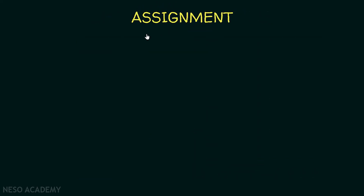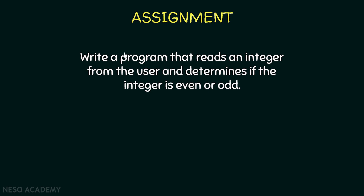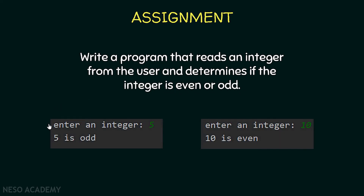Now here is an assignment: write a program that reads an integer from the user and determines if the integer is even or odd. For example, if the user enters 5, print '5 is odd'. If the user enters 10, print '10 is even'. In the next video we will see the solution to this assignment.